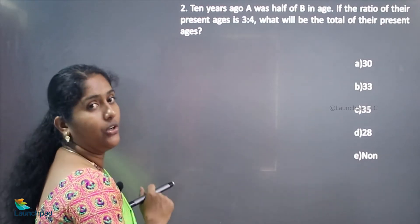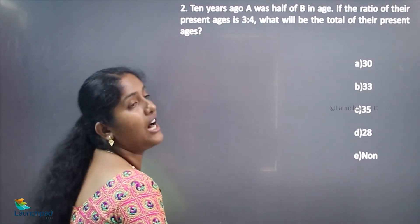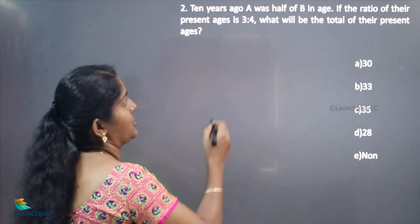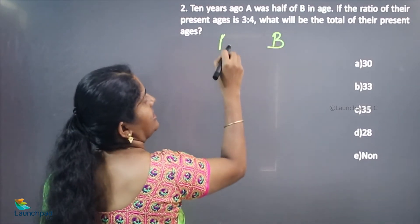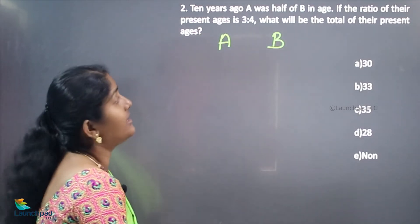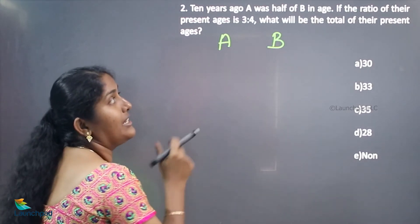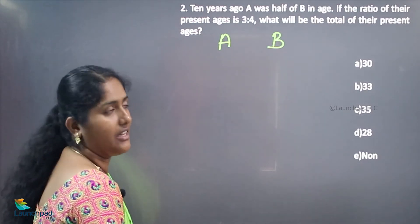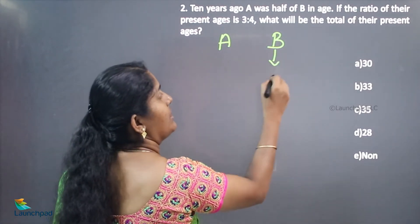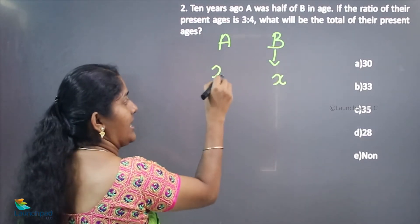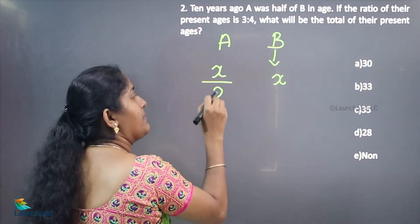10 years ago, A was half of B in age. We don't know B's age and A's age. 10 years ago, A was half of B in age. Let B's age be X, which means A's age was X by 2.